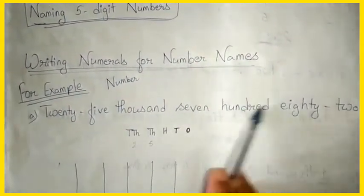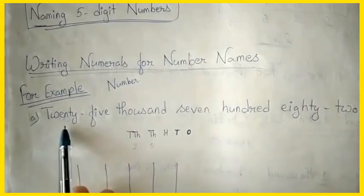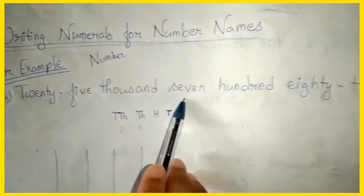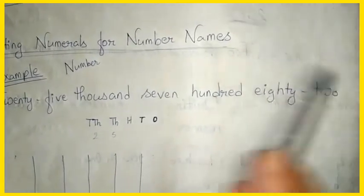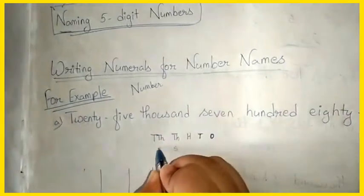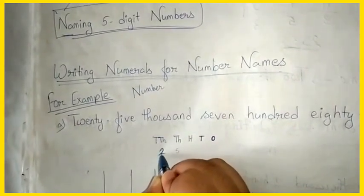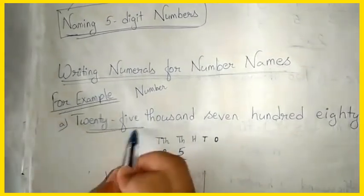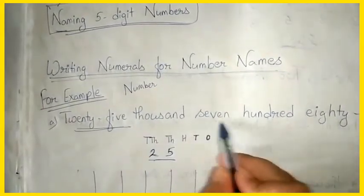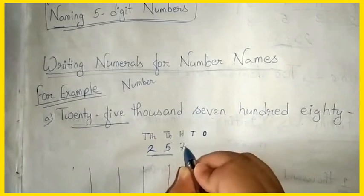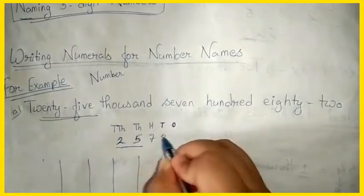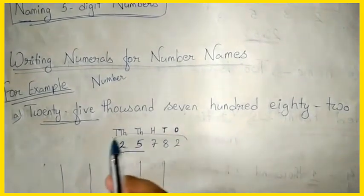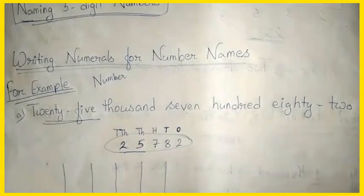The number name given is twenty-five thousand seven hundred eighty-two. Twenty-five thousand means 2 will be in the ten-thousands place and 5 will be in the thousands place — that gives us twenty-five thousand. Then seven hundred eighty-two follows. So the numeral is 25,782. This is how we represent numerals for number names.